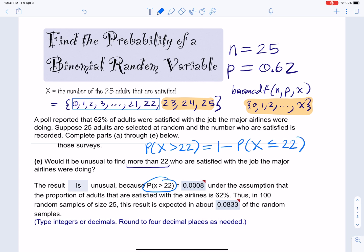This is equal to 1 minus the probability that X is less than or equal to 22. Starting at 22, from 0 to 22. But this is exactly what binomcdf is. It's going less than 22, so we would plug in 22. So we would say 1 minus binomcdf, 25, 0.62, and 22. And that should give us our answer.